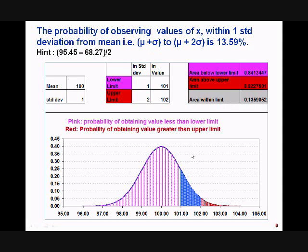This area is shown by the blue color. To calculate this probability: the area within 2 standard deviations on both sides is 95.45%, and the area within 1 standard deviation on both sides is 68.27%. So the probability of obtaining a value between 98–99 and 101–102 combined is 95.45% minus 68.27%. Since we are interested in just one side and both sides are symmetric, we take half of that difference — which gives us the blue area shown.